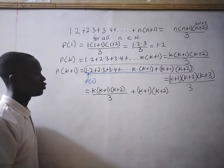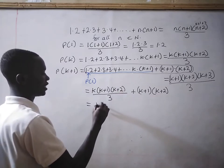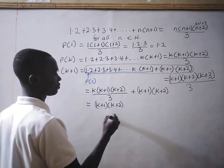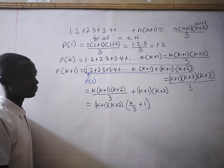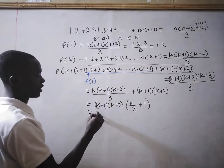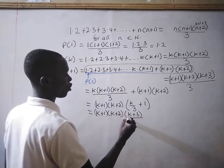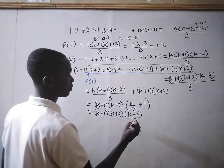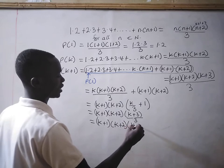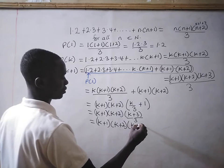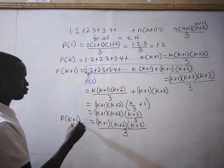This equals k×(k+1)×(k+2) divided by 3, plus (k+1)×(k+2). We can factorize (k+1)×(k+2) out, and we are left with k divided by 3 plus 1. This gives us (k+1)×(k+2)×(k+3) all divided by 3. And this is equal to (k+1)×(k+2)×(k+3) all divided by 3, which is P(k+1).